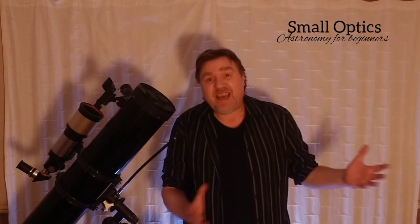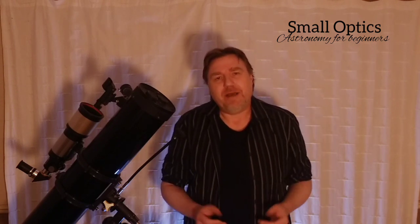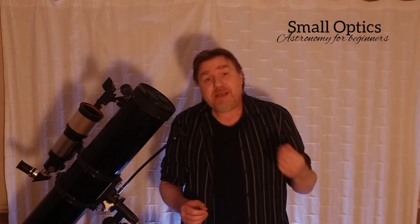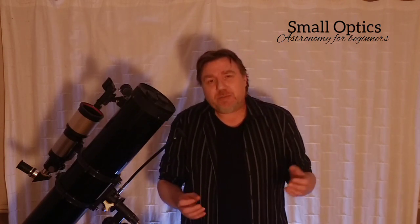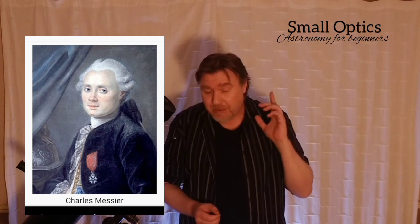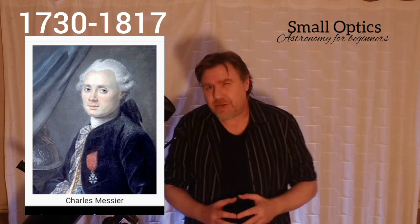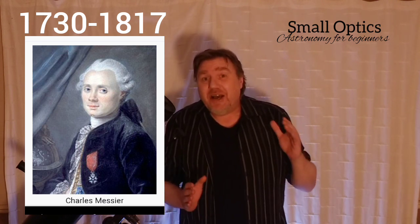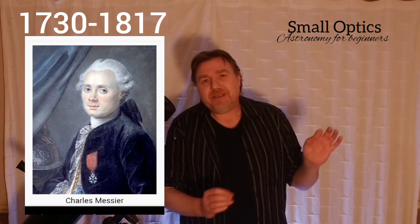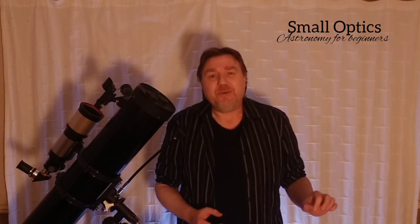If you don't know what a Messier target is, you may have seen it referred to as M4, M33, or whatever - that M just stands for Messier. Charles Messier was a French astronomer who lived between 1730 and around 1816 or 1817. He was actually a comet hunter and he kept coming across these faint fuzzies in the sky that were kind of an annoyance to him.